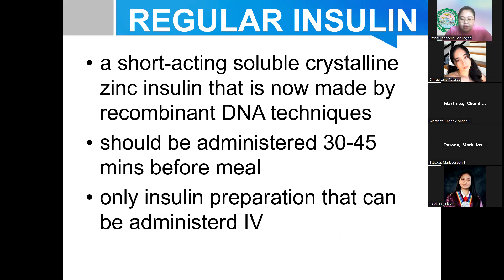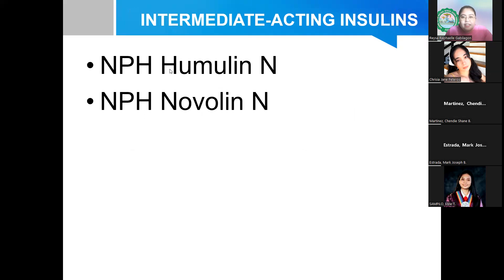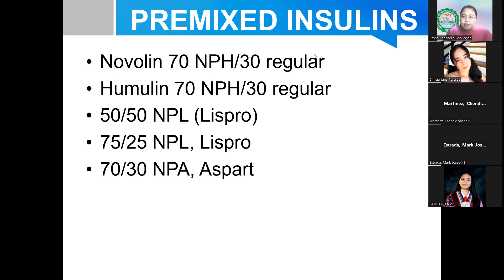Intermediate acting insulins have an 'N' in their brand names — 'N' stands for NPH (intermediate acting), while 'R' is regular (short acting). There are also premixed insulins — a mixture of intermediate acting and short acting or rapid acting insulins.